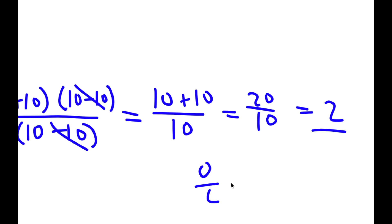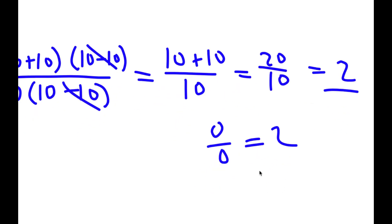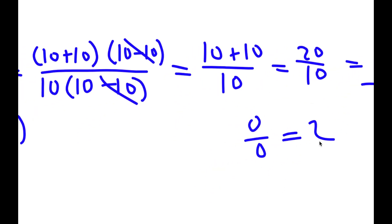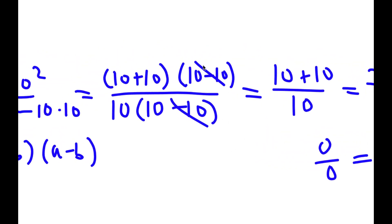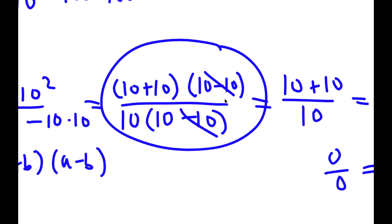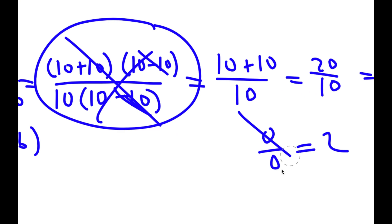So I just proved that 0 over 0 is equal to 2. Obviously, 0 over 0 is not equal to 2. The error is in this step right here, when I cancelled out the 10 minus 10 over 10 minus 10. Ten minus ten is simply zero, so that's zero divided by zero — and that's not equal to 1; it's indeterminate. So I can't actually cancel those out, because that implies zero divided by zero is 1, which it's not. So zero divided by zero is not 2.